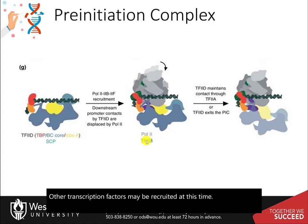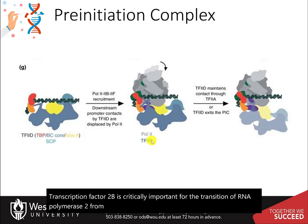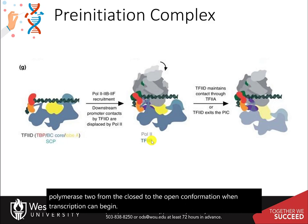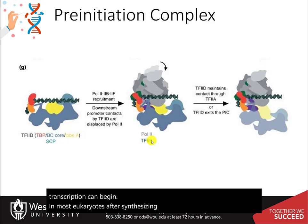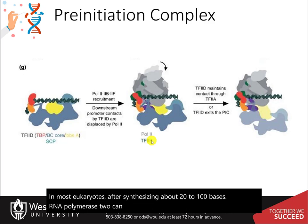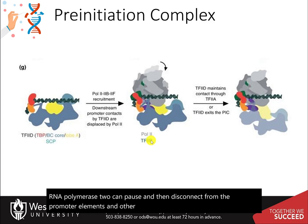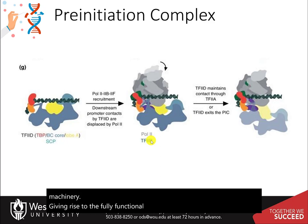Transcription factor 2B is critically important for the transition of RNA polymerase II from the closed to the open conformation when transcription can begin. In most eukaryotes, after synthesizing about 20 to 100 bases, RNA polymerase II can pause and then disconnect from the promoter elements and other components of the transcriptional machinery, giving rise to the fully functional elongation complex in a process called promoter escape.